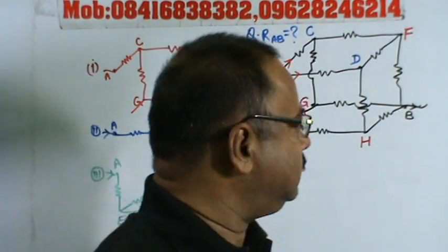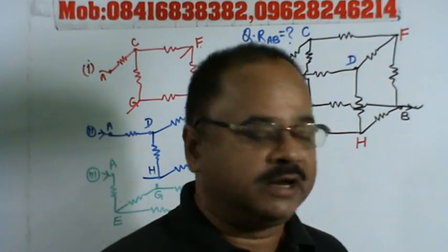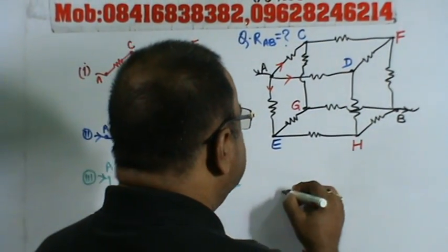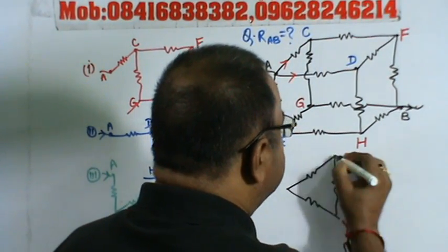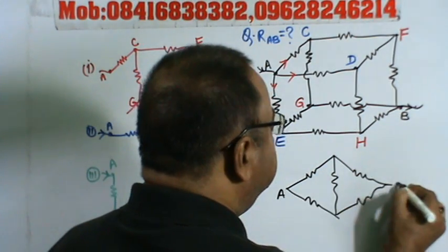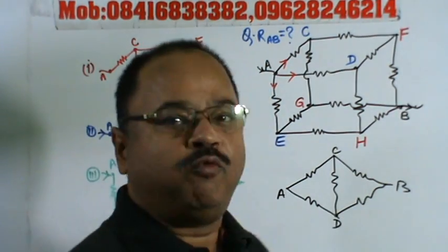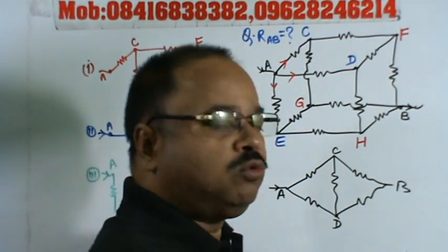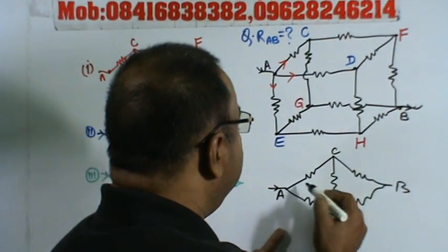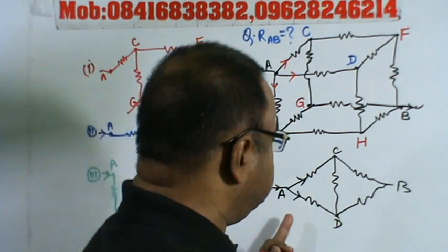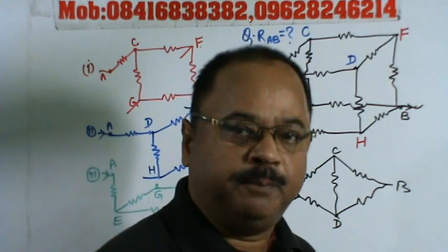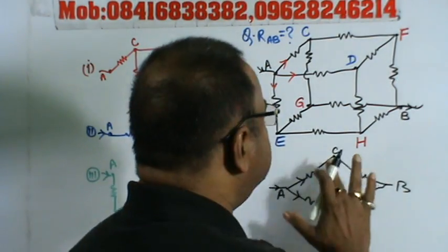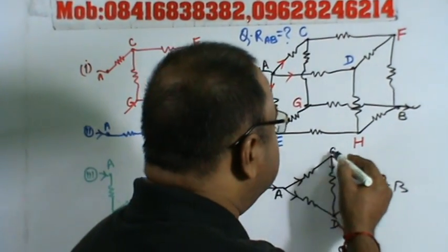In the balanced Wheatstone bridge, the method of short circuiting is used — we short circuit points which are at the same potential. Due to symmetry of the circuit, whatever current is entering at A goes through two electrically symmetrical roots, so the same current flows through both branches. As a result, points C and D will be at the same potential, and no current flows through the resistance between them, so we can short circuit C and D.